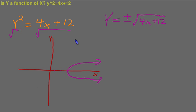So now let's draw a vertical line. We can see that it hits the graph in two different spots. So this is not a function.